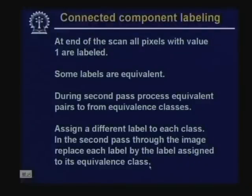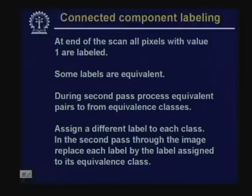At the end of the scan, all pixels with value 1 will have some level and some levels will be equivalent. During the second pass, all equivalent pairs are processed to form equivalence classes, and each equivalence class is assigned a single representative level. The image is then re-scanned and all levels belonging to an equivalence class are replaced by the class's representative level, yielding a final labeled image where pixels belonging to the same region share the same level.